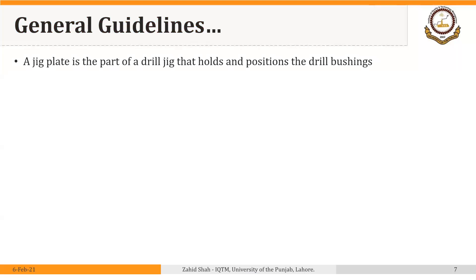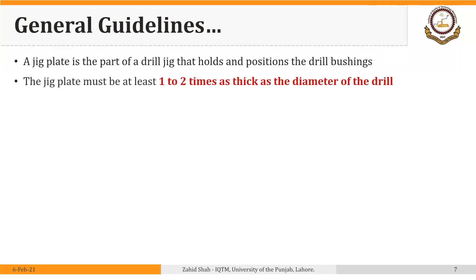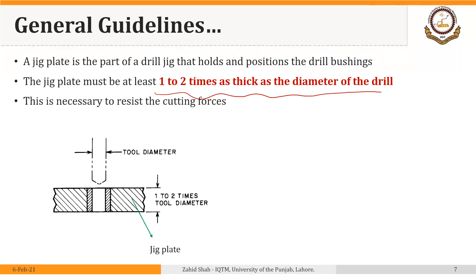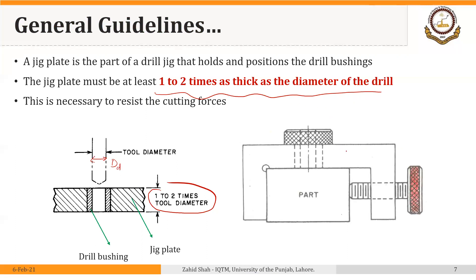A jig plate is the part of a drill jig that holds and positions the drill bushings. The jig plate must be at least one to two times as thick as the diameter of the drill. This is necessary to resist the cutting forces. The thickness of the jig plate should be at least equal to the diameter of the drill, and may be up to two times the tool diameter.